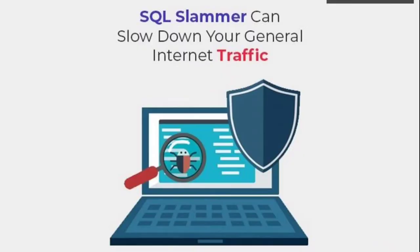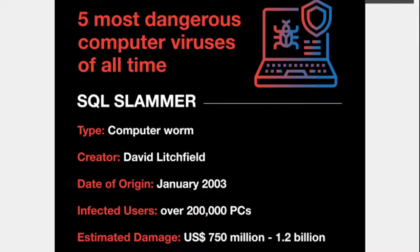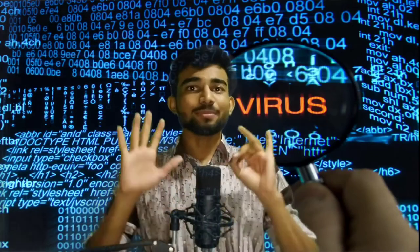Number 8 is SLAMMER. Slammer is the virus which causes the loss of 1.2 billion American dollars, which is a very high amount.